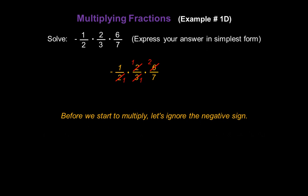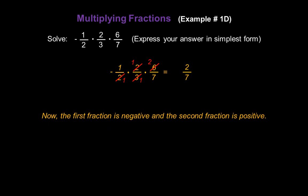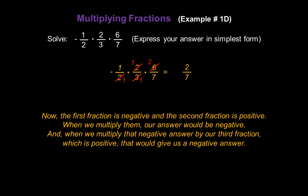Before multiplying, we ignore the negative sign on the first fraction. The numerator is 1 times 1 times 2, giving us 2. The denominator is 1 times 1 times 7, giving us 7. Now, the first fraction is negative and the second is positive — a negative times a positive is negative. Multiplying that negative result by the third fraction, which is positive, still gives a negative. So our answer is negative 2/7.